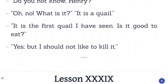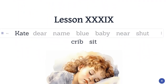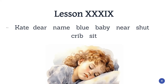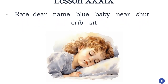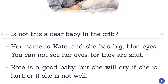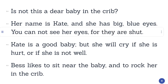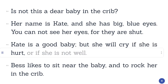Lesson 39. Kate. Dear. Name. Blue. Baby. Near. Shut. Crib. Sit. Is not this a dear baby in the crib? Her name is Kate, and she has big blue eyes. You cannot see her eyes, for they are shut. Kate is a good baby, but she will cry if she is hurt, or if she is not well.